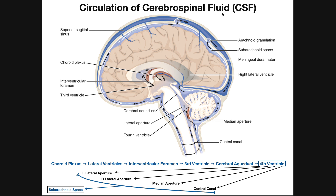Let's define cerebrospinal fluid. Cerebrospinal fluid is a fluid derived from blood, made specifically by cells in tissues called choroid plexuses. Each one of the brain ventricles has a choroid plexus — clusters of cells that take arterial blood and selectively move certain parts of it into the ventricles as a new fluid called cerebrospinal fluid. It contains a lot of ions.